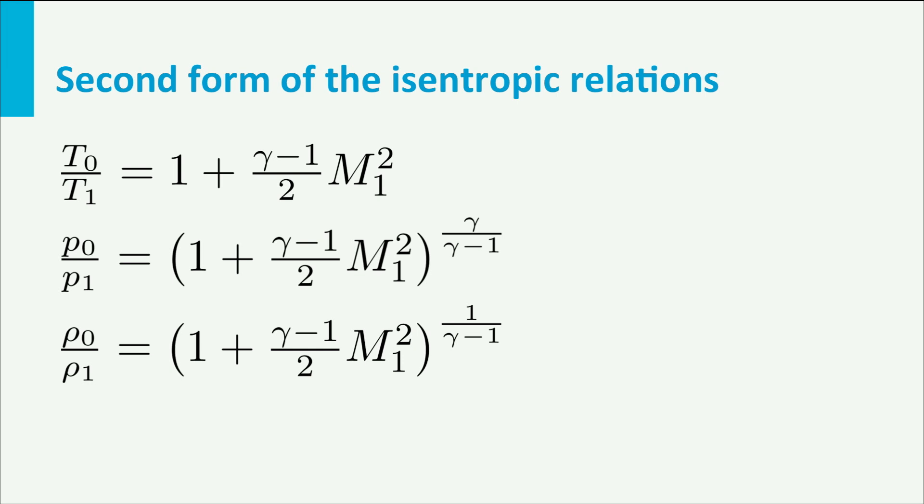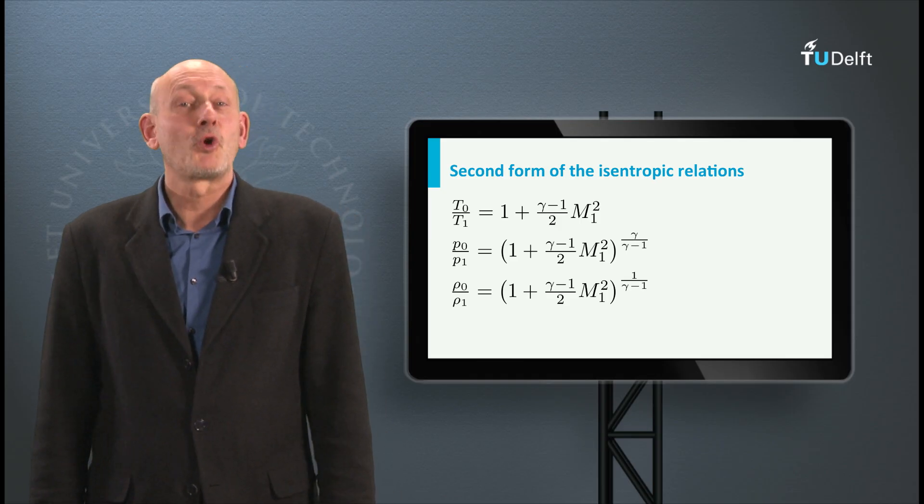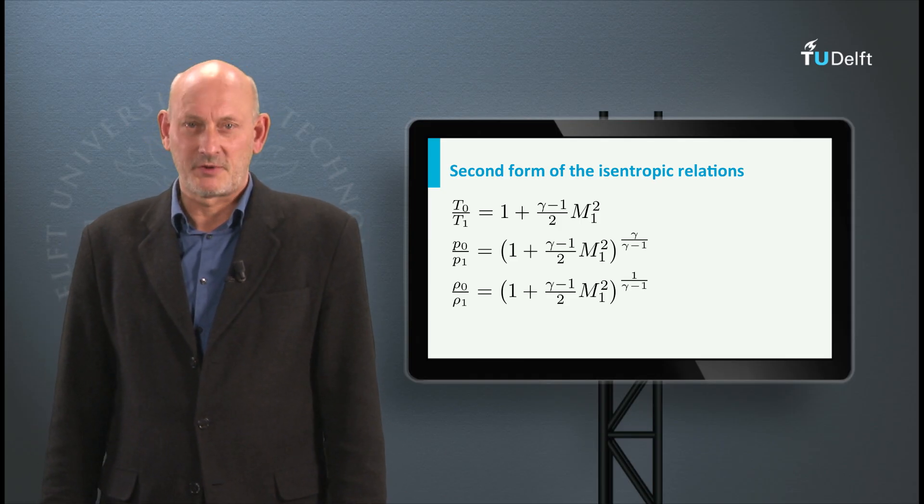If we combine this equation with the isentropic relations we derived earlier, we get these expressions which relate temperature, pressure and density to the Mach number. They are also called the second form of the isentropic relations.